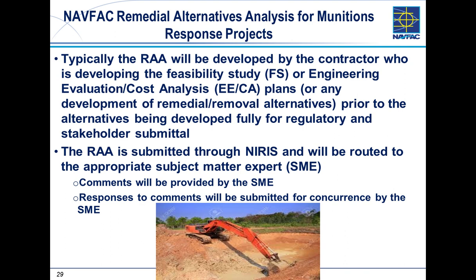Typically, you need to make sure the RAA is done before you draft your FS or your NECA. The RAA should be one of the first steps in gathering information and fleshing out what those alternatives are going to be. You'll give your remedial alternatives and walk through the various selection criteria. The RAA is submitted in NIRIS, and there's a point of contact established in NIRIS. When they see an RAA come in, they reach out to the appropriate subject matter experts for that project, and the appropriate SMEs can engage through that NIRIS submittal process.